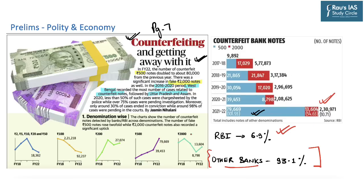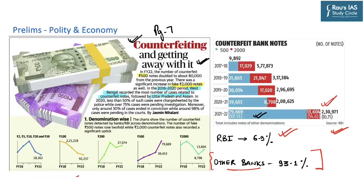From 2016 to 2020, West Bengal recorded the most number of cases related to counterfeit notes, followed by Uttar Pradesh and Assam. It is also interesting to note that RBI, the Reserve Bank of India, found almost 6.9% of notes as counterfeit, whereas 93.1% of counterfeit notes were found by other scheduled commercial banks of India, as per data from RBI and NCRB — the National Crime Records Bureau. Despite the increase in counterfeit banknotes of rupees 500 and 2000, there has been a decline in the use of counterfeit notes for the denominations of rupees 50 and 100.